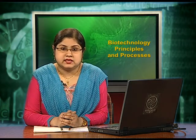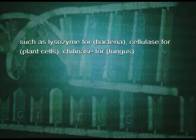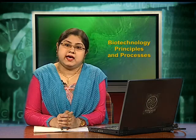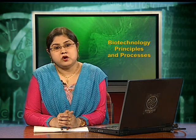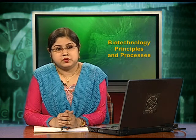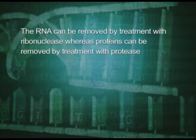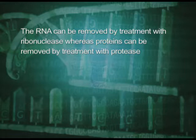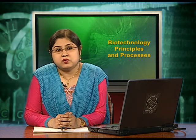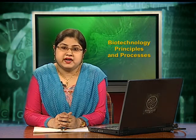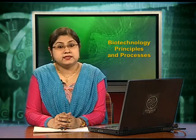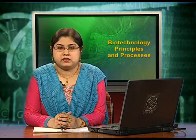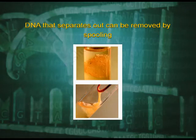This can be achieved by treating the bacterial cell or plant or animal tissues with enzymes such as lysozyme for bacteria, cellulase for plant cells, and chitinase for fungus cells. As you know, genes are located on long molecules of DNA intertwined with proteins such as histones. RNA can be removed by treatment with ribonuclease, whereas proteins can be removed by treatment with protease. Purified DNA ultimately precipitates out after the addition of chilled ethanol and can be seen as a collection of fine threads in suspension, as shown in this diagram.